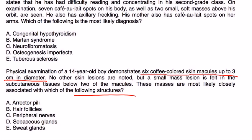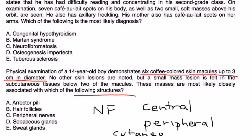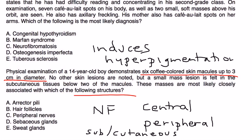In neurofibromatosis, you have two types of tumors: central and peripheral. The peripheral ones are mostly cutaneous or subcutaneous, which induces hyperpigmentation seen as these coffee-colored skin macules, also known as cafe au lait spots. These involve the peripheral nerves, which would be choice C.